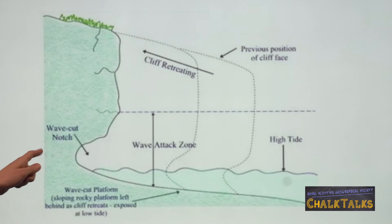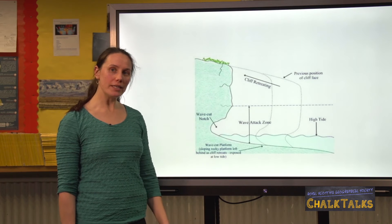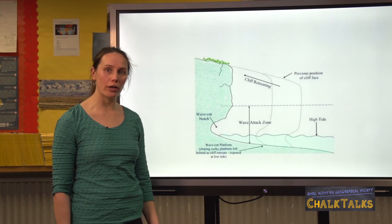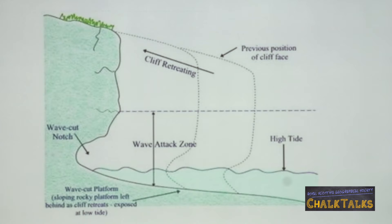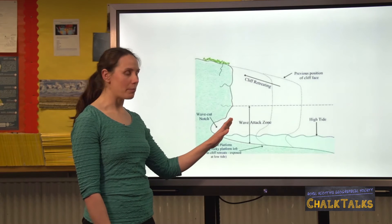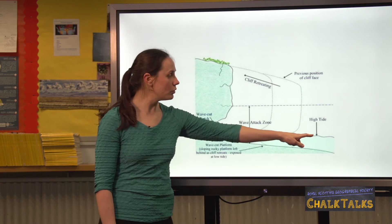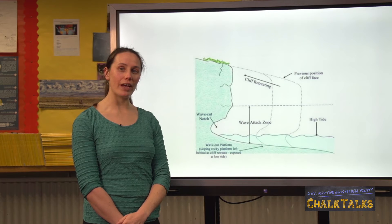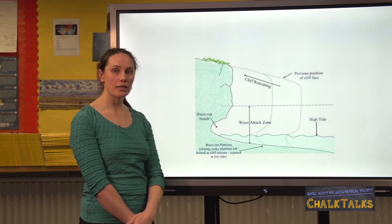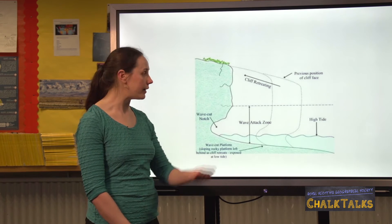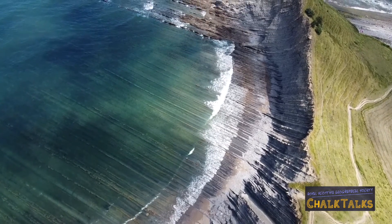As the wave-cut notch continues to get bigger, the cliff above becomes more and more overhanging and eventually collapses. The material from the cliff is broken up smaller and rounder by attrition and is also used in abrasion to smooth the rock platform and attack the cliff further. The cliff continues to retreat. Eventually the waves lose so much energy travelling over the wave-cut platform that they won't have enough energy to erode the cliff. Once that happens, sub-aerial processes such as freeze-thaw weathering become more important and the cliff gradually becomes less steep.